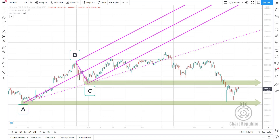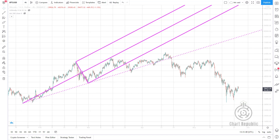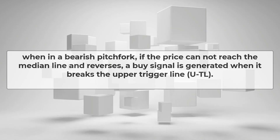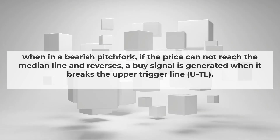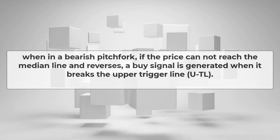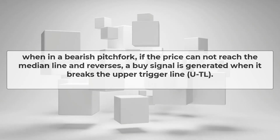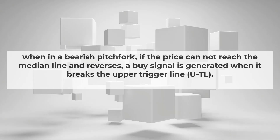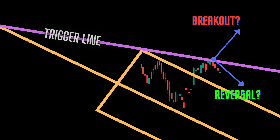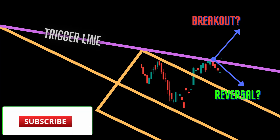As you can see, the market has touched both of these levels, so we could make a good profit by going short while most traders in the market were losing money. This strategy also applies to a falling pitchfork: when in a bearish pitchfork, if the price cannot reach the median line and reverses, a buy signal is generated when it breaks the upper trigger line, or UTL.